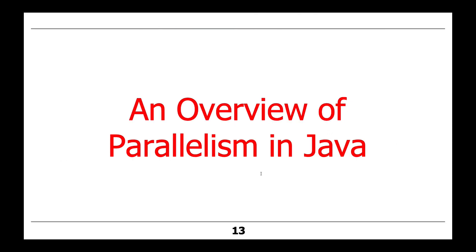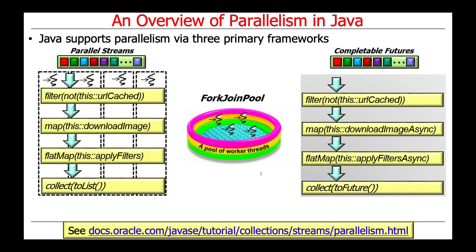That's a quick overview of parallelization. Let's now talk about what Java provides to support parallel computing. Modern versions of Java — Java 8 and beyond — support three primary frameworks that make parallel computing easier by providing support for it out of the box.